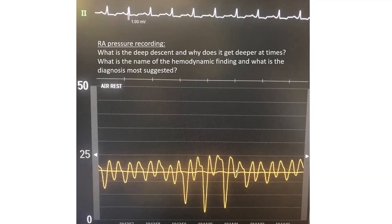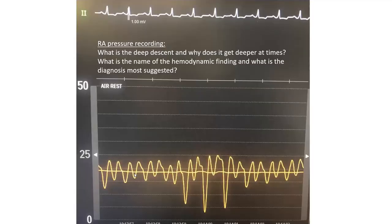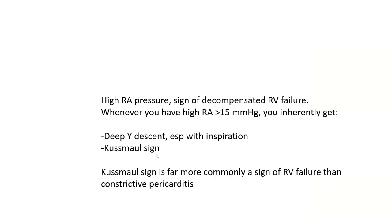Constrictive pericarditis can give you that, but it's a far less common cause. Whenever you have high RA pressure, it's a sign of decompensated RV failure. And whenever you have high RA pressure over 15, you inherently will have those two findings: deep Y descent especially with inspiration, and Kussmaul sign. In fact, if I see high RA pressure in this range yet the mean is fluctuating with respiration without deep Y descent, I will wonder if my zero or calibration is incorrect, because you inherently will have those whenever you have RV failure with high RA pressure.